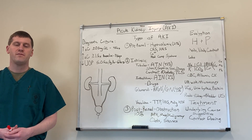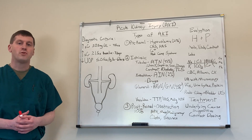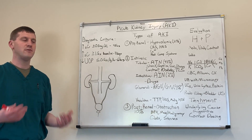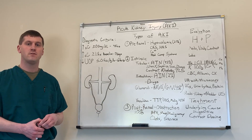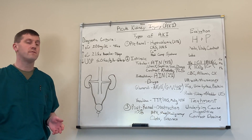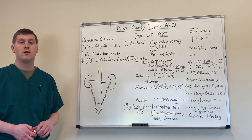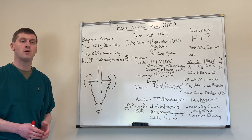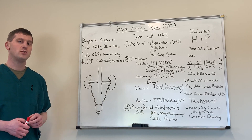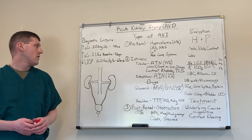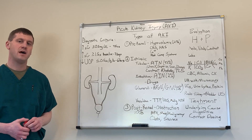So first off, how do we determine if a patient has an acute kidney injury? We have three different societies that all have different guidelines, but three things are pretty standard between all of them: an increase in serum creatinine of 0.3 milligrams per deciliter above baseline over 48 hours; an increase in serum creatinine greater than 1.5 times baseline over seven days; or urine output less than 0.5 cc's per kilogram per hour over six hours.